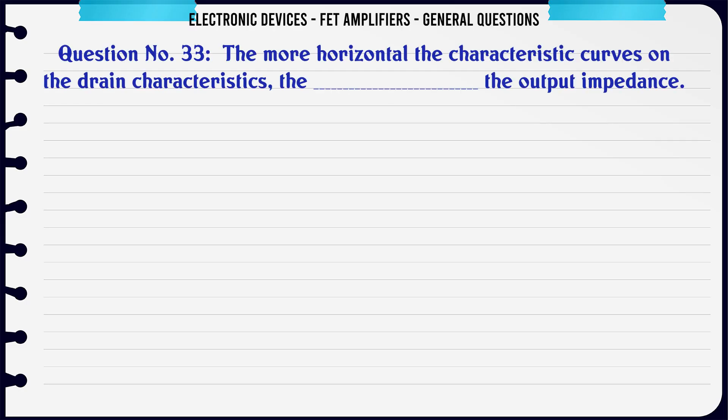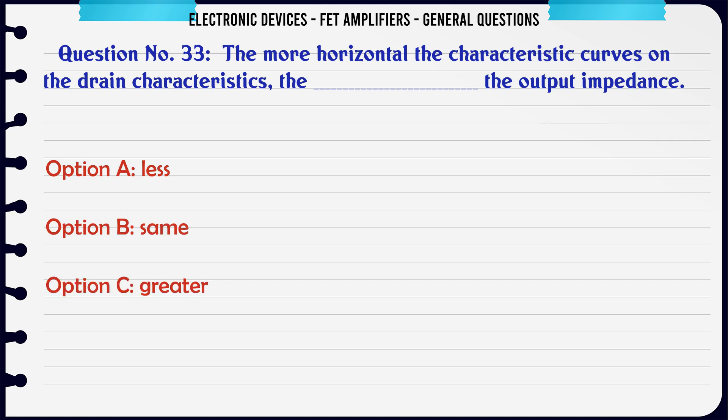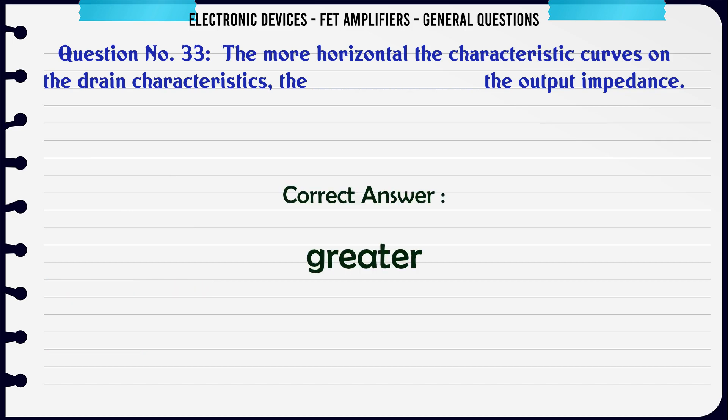The more horizontal the characteristic curves on the drain characteristics, the _______ the output impedance. A. Less. B. Same. C. Greater. D. (no option). The correct answer is Greater.